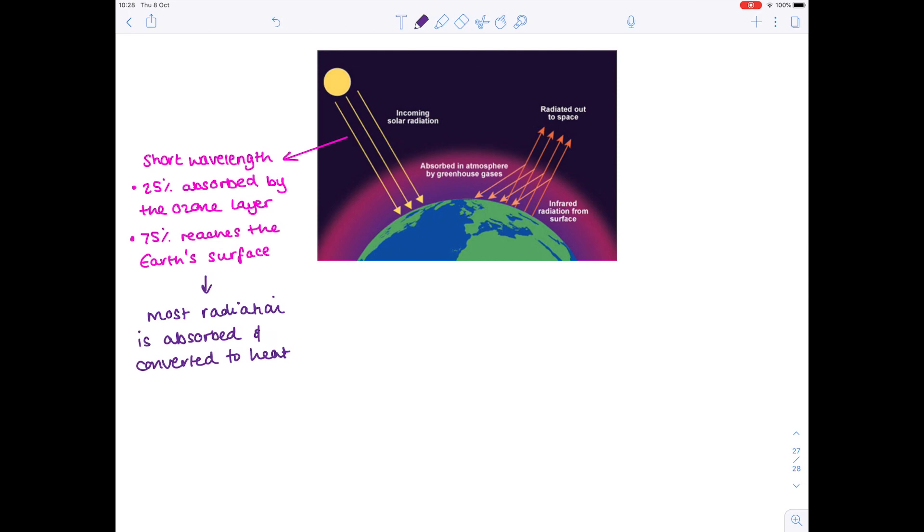The next important step is that the surface of the Earth re-emits this radiation but at much longer wavelengths. You can see it being emitted over here. And this much longer wavelength means that it is now predominantly infrared, which remember is just heat.